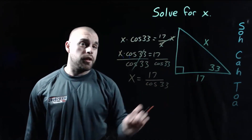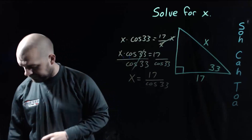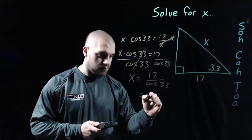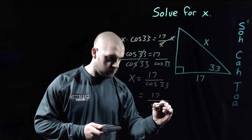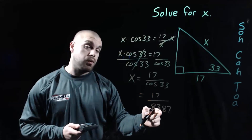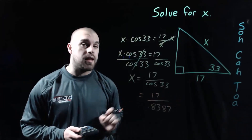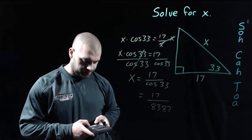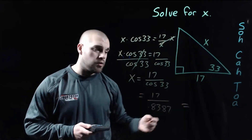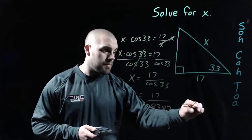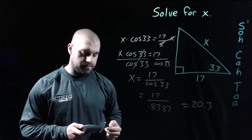I type the cosine of 33 degrees into my calculator and get 0.8387. Now I take 17 divided by that decimal, and we get about 20.3 as our answer for X.